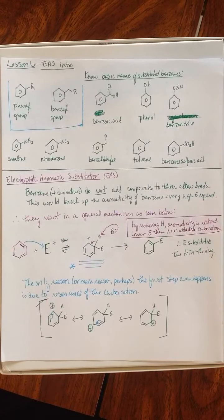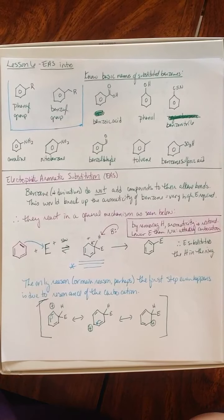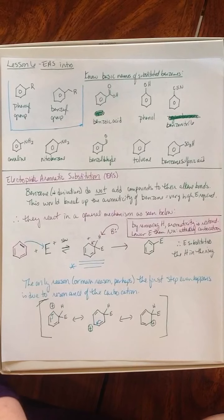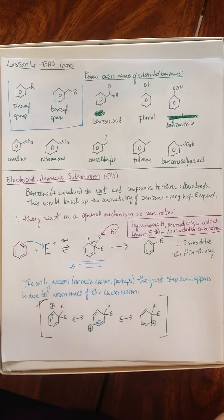in order to even remove that pi bond conjugation system, it often takes 250 degrees Celsius. And that's a catalyzed type of reaction. We're talking very high energy here. So it's just not the way that benzene reacts.